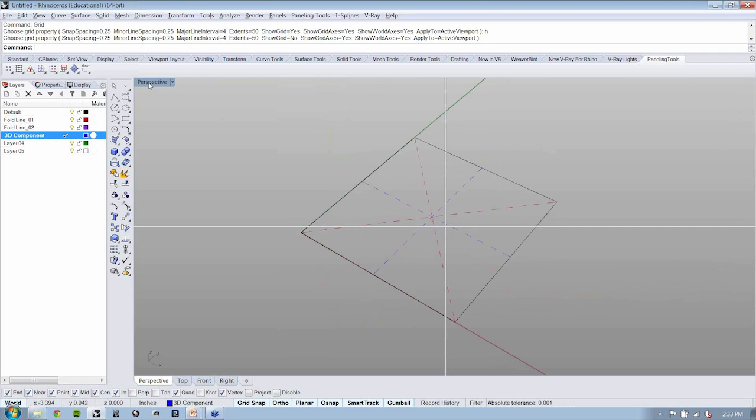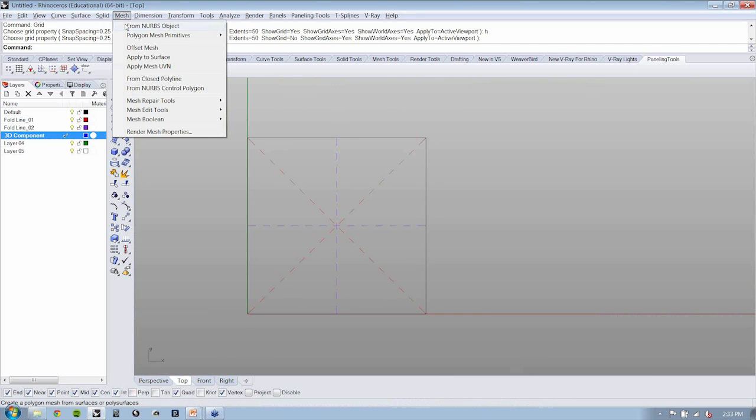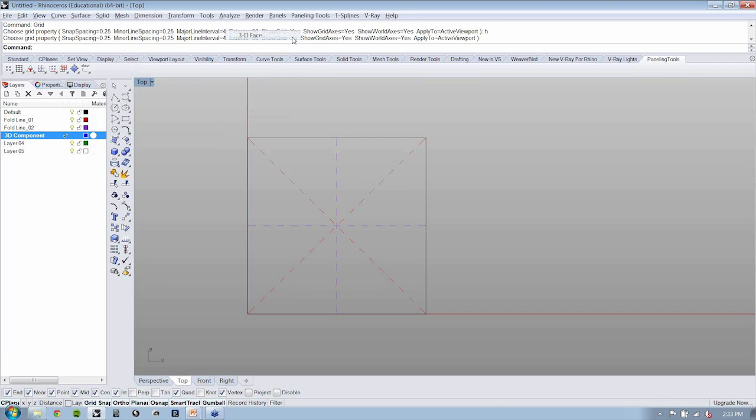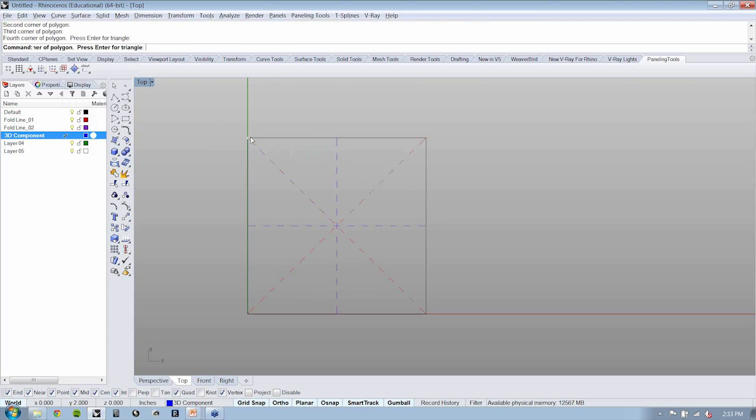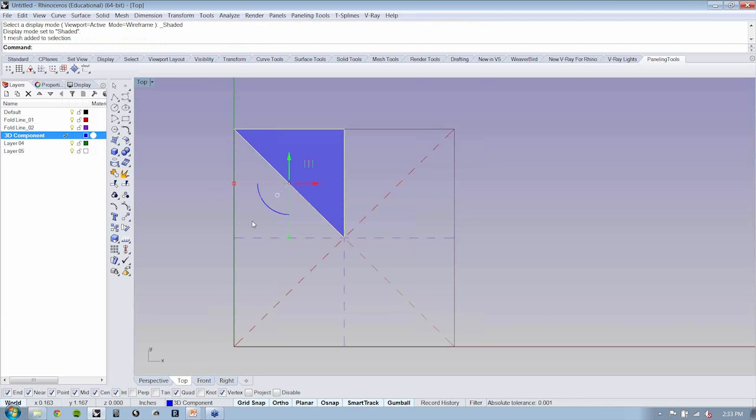I'm going to create a layer called 3D component. In top view, I'm going to use the mesh command, 3D face. 3D face will allow us to click, snapping to our lines, to draw single mesh faces.